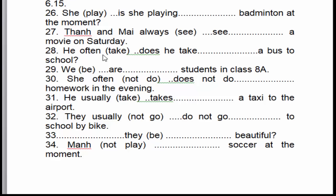Câu số 33: 'Are they beautiful?' Câu này là câu hỏi. Họ đẹp phải không? Đây là chuyện bình thường, cho nên chúng ta sử dụng thì hiện tại đơn ở thể nghi vấn. 'They' là chủ ngữ số nhiều. To be 'am/is/are' — sẽ là 'are'.